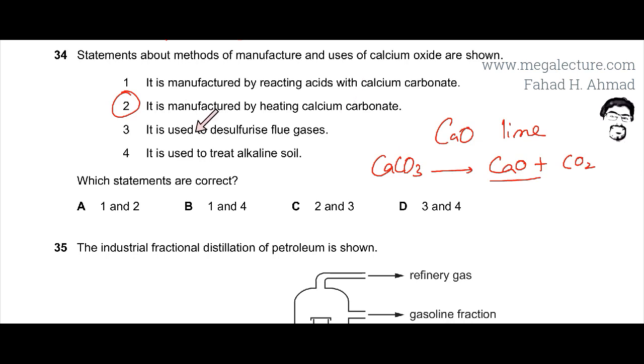Next one is it is used to desulfurize flue gases, which I've already told you that's a correct statement, because calcium oxide and your acidic gases like sulfur dioxide and nitrogen dioxide, these two gases are acidic. They combine and they end up forming salts like calcium sulfide and calcium nitrate. So these salts are produced during this reaction. So the flue gases get neutralized and end up forming salts. So it is used to desulfurize flue gases.